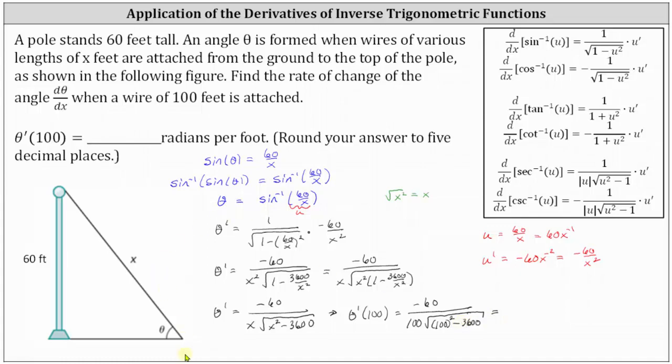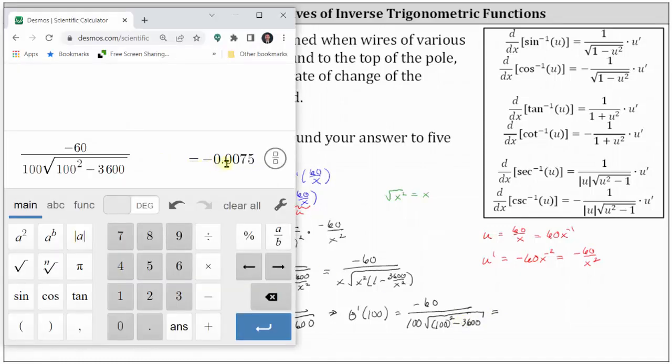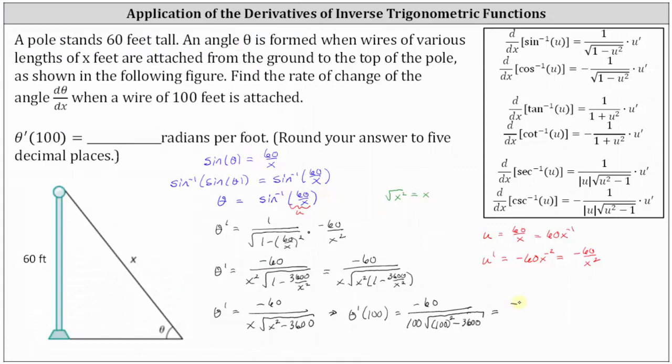And now let's go to the calculator. Notice the exact value in decimal form is -0.0075 or as a fraction -3/400. So we have -3/400 radians per foot as a fraction or -0.0075 radians per foot. And again, the question does say round the answer to five decimal places, which doesn't apply here because we have the exact value to four decimal places.